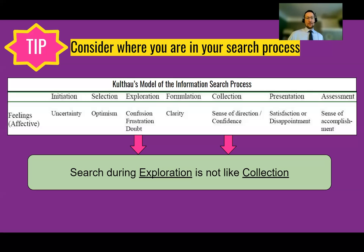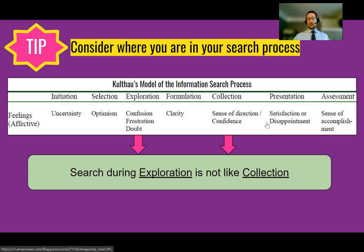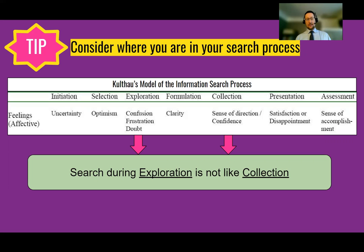Where you are in the search process matters. This is part of a model from Carol Kuhlthau, a researcher about how students and other people do information seeking. She came up with a multi-stage model and also researched what people feel as they're doing it. Initiation, selection, exploration, and formulation all fall into prep. When you initiate a topic, you realize you need information, select your main topic, explore to gain general knowledge, and then formulate what you're going to do — that's four whole stages. Exploration is done very differently from the collection stage.